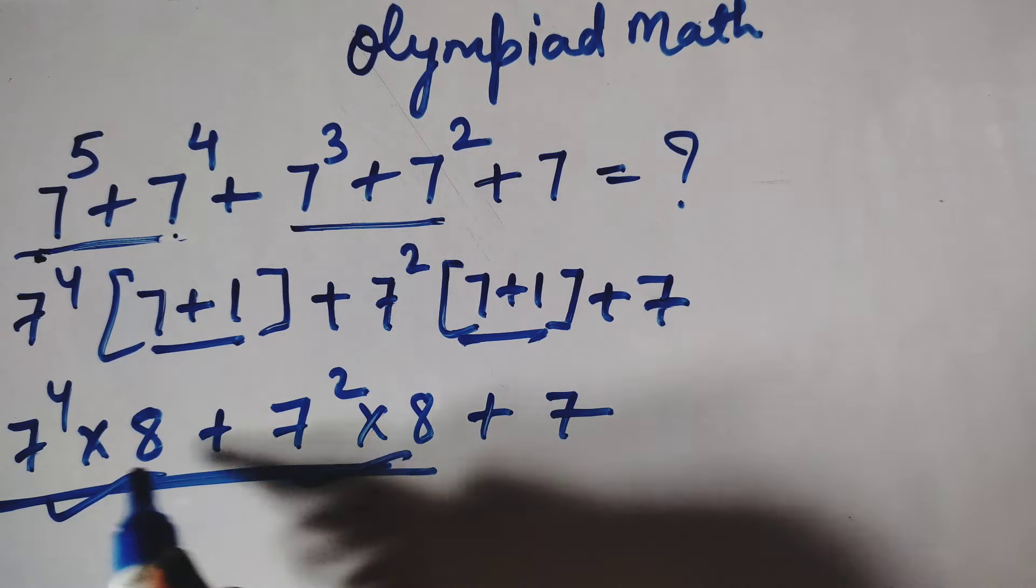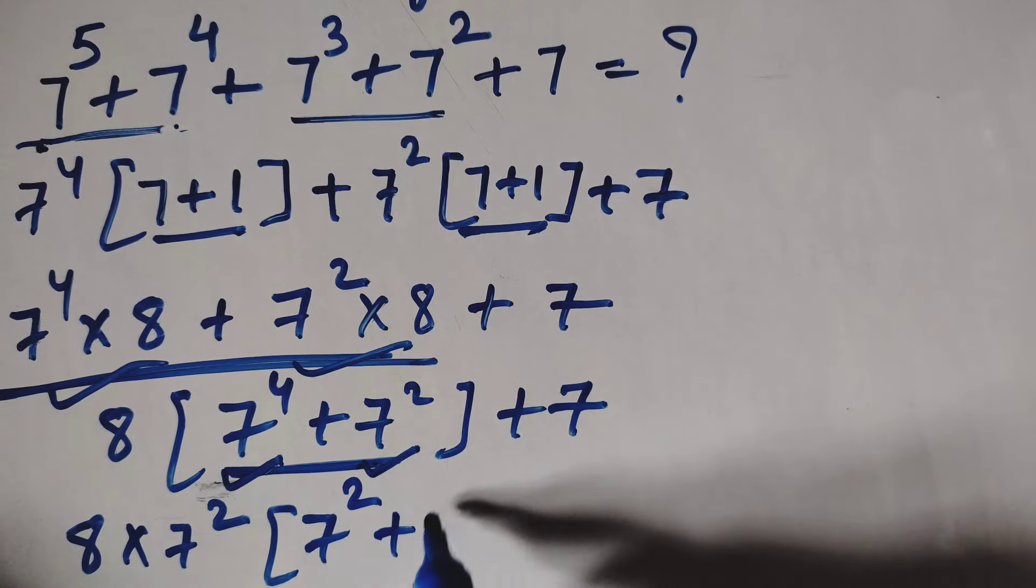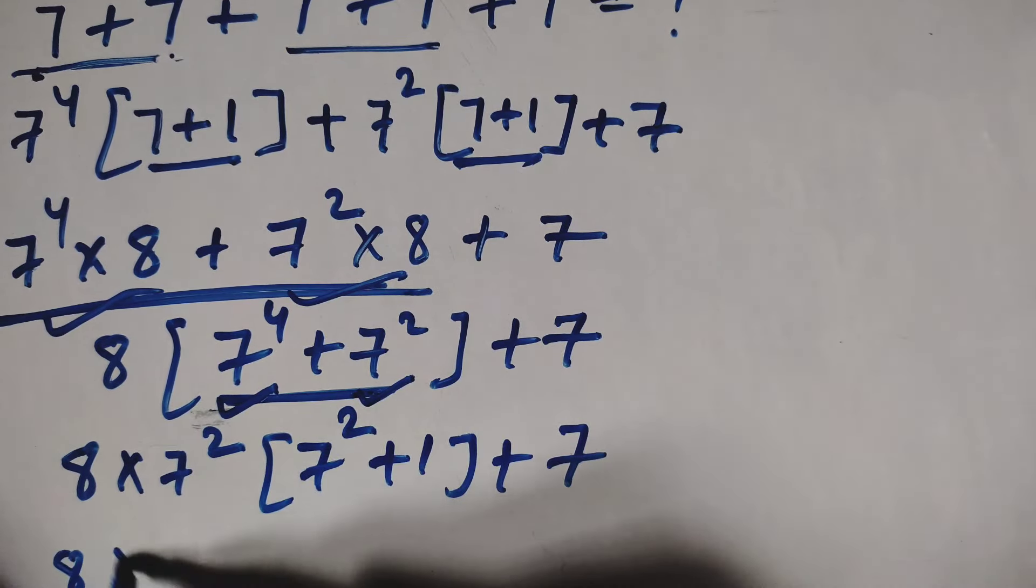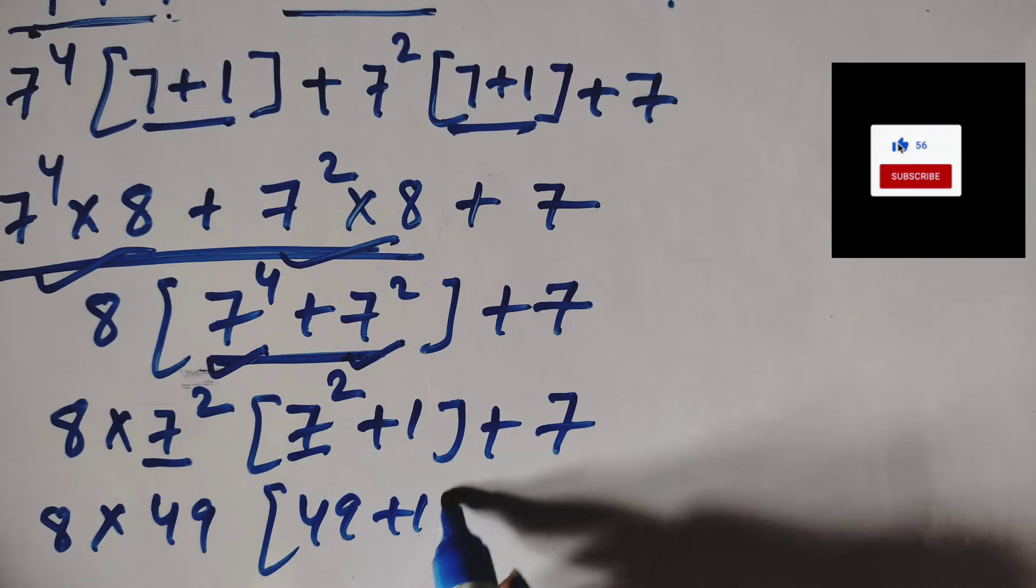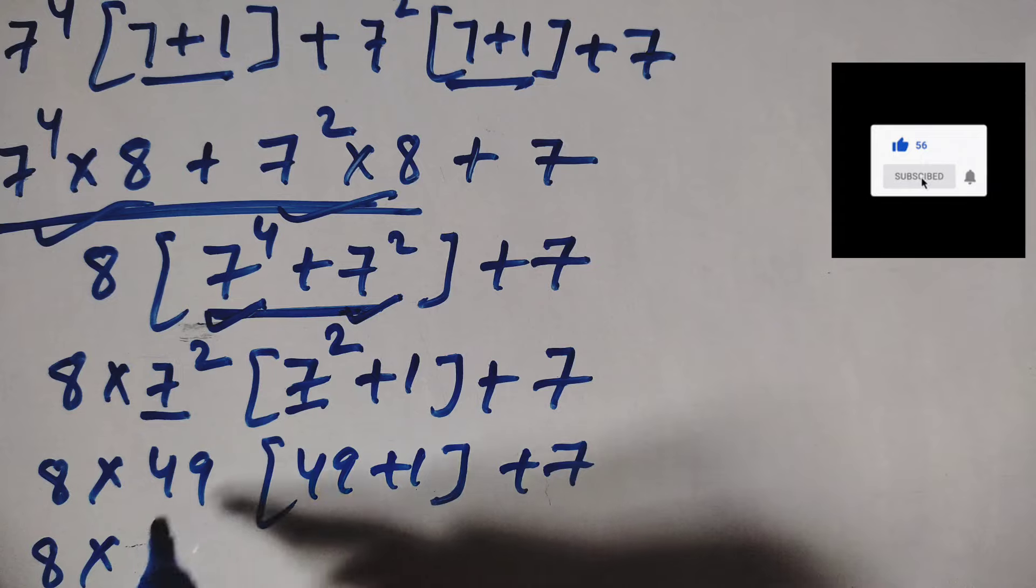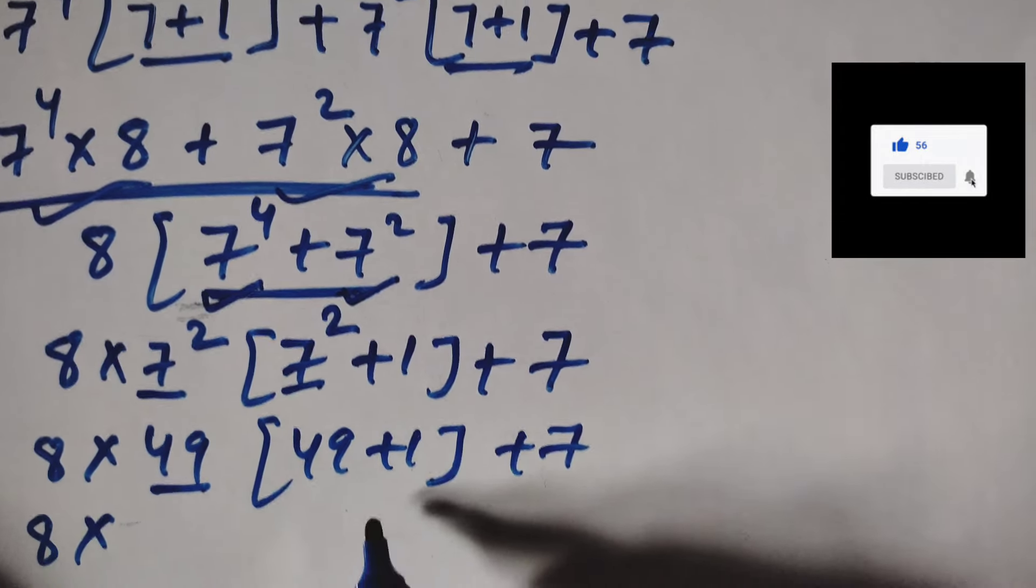You can see in these two terms, 8 is common, so we take out 8. Inside is 7 to the power 4 and 7 squared plus 7. Now which is common: we take out 7 squared outside, so inside the remaining is 7 squared and here is 1 plus 7.